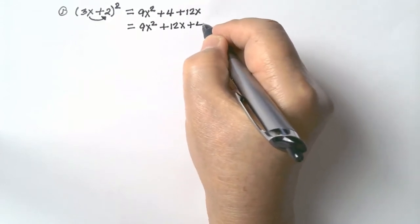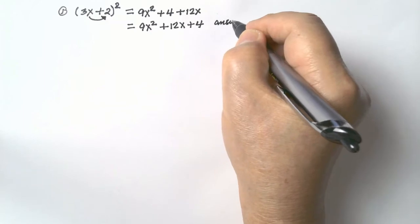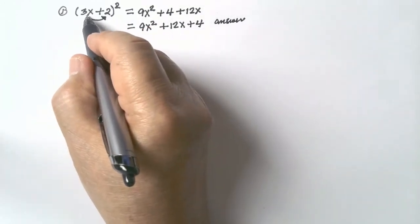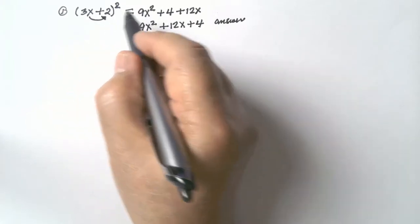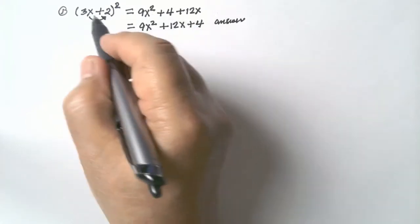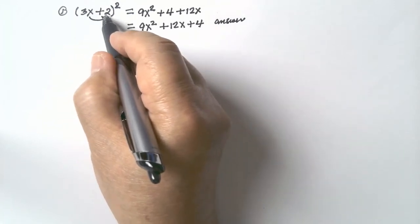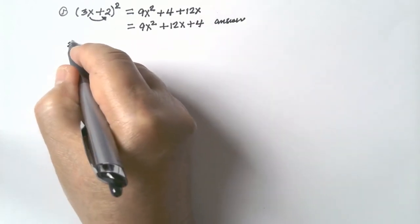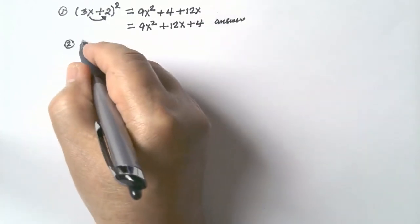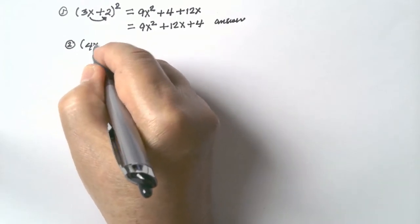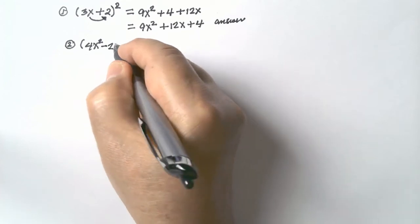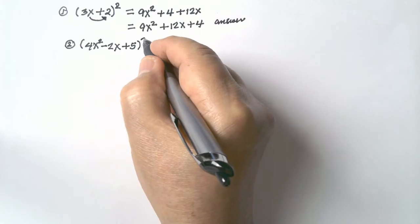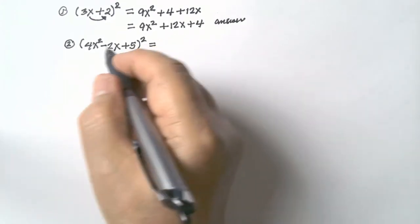Plus 4 — that's the answer. To recap: square the first term, square the second term, multiply the first term by the second and multiply the result by 2, giving 12x. Example number 2: (4x squared minus 2x plus 5) squared. Square the first term, square the second term, square the third term, then multiply the first term by the second.